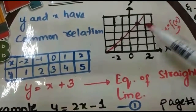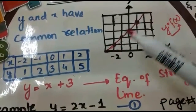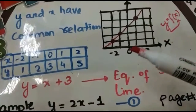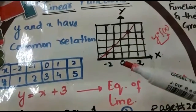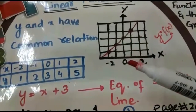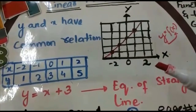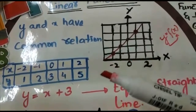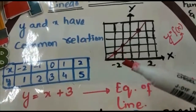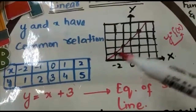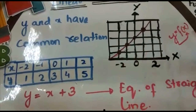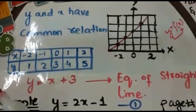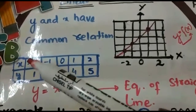Now look at this graph. We have a straight line represented by the red line. The black boxes show the graph. I have taken three values: zero, which represents the origin, a positive value on the positive axis, and negative two on the negative axis.